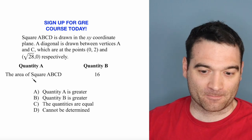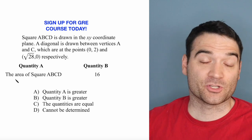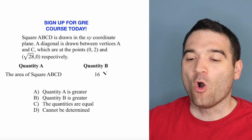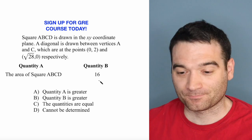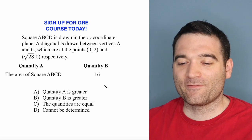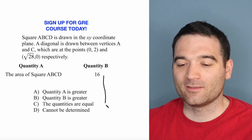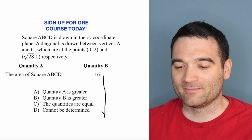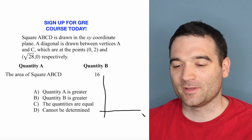We want to know what's greater: Quantity A, which is the area of square ABCD, or Quantity B, which is 16. Alright, well, if they don't give you a drawing, you better draw one yourself. That's my two cents. So let's get to it.